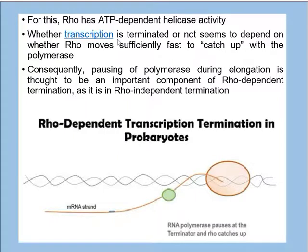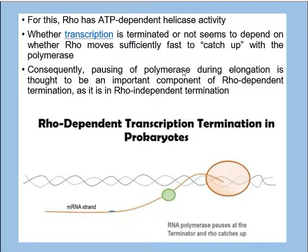The pausing of the polymerase during elongation is thought to be an important component of both rho-dependent and rho-independent termination — the formation of the stem-loop is one of the factors causing RNA polymerase to stop, whether the process is rho-dependent or rho-independent. These are the two types of termination seen in prokaryotes: rho-dependent and rho-independent termination of transcription.